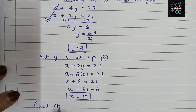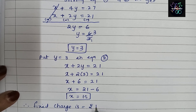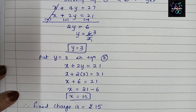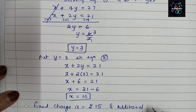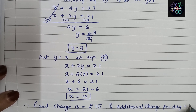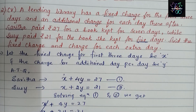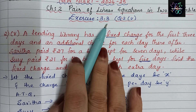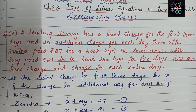Therefore, the fixed charge for the first three days is rupees 15, and the additional charge per day is rupees 3. This completes Question 5 of Exercise 3.3. In my next video I am coming up with the next chapters, so do like, share, and subscribe to my channel. Thank you.